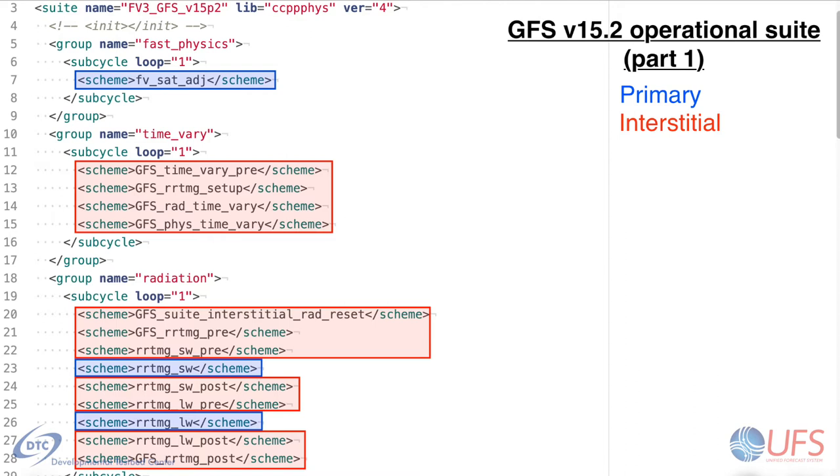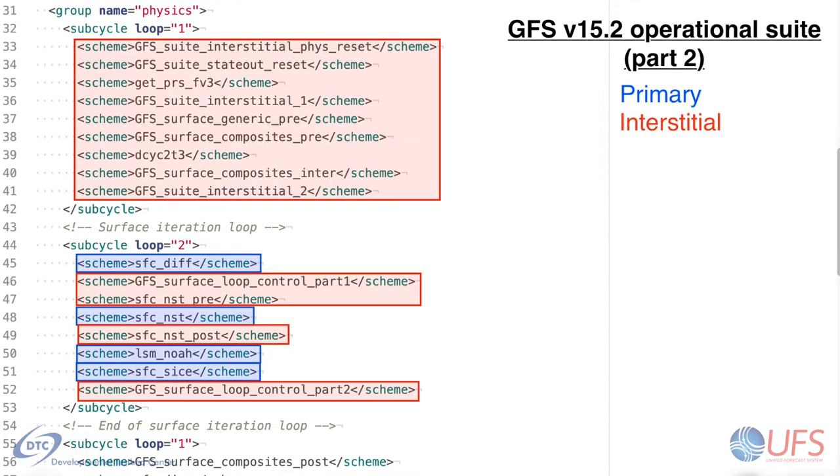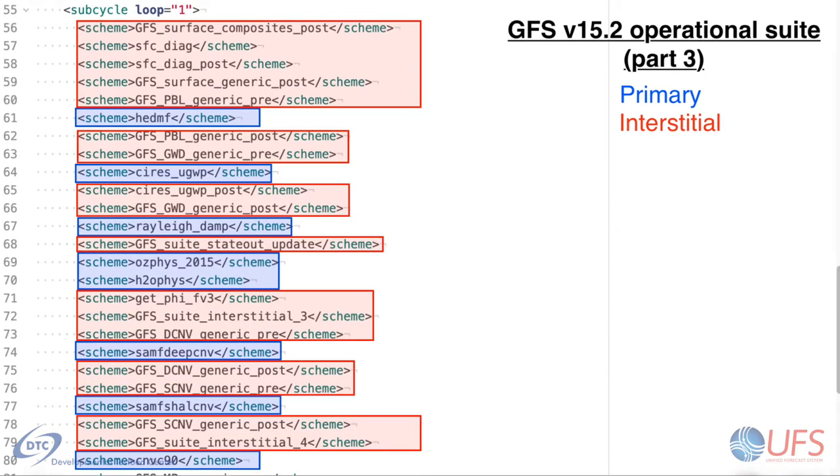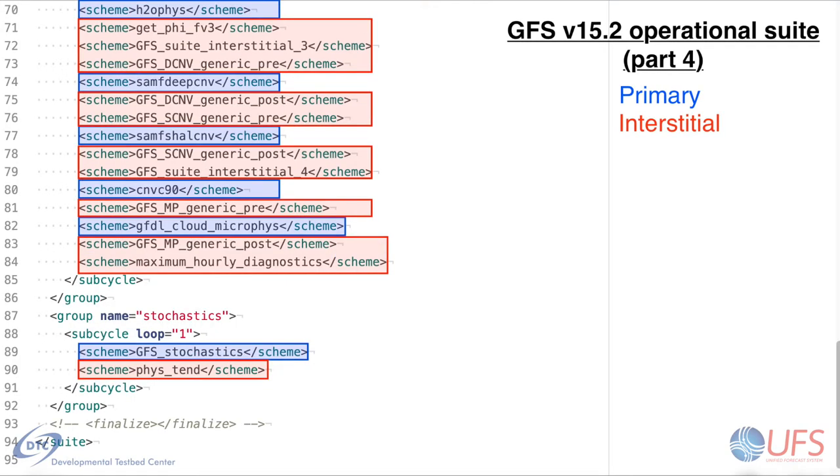Primary schemes within a suite are generally responsible for its scientific behavior and performance, whereas interstitial schemes ensure that the primary schemes work well together and make sure that a collection of schemes calculate all diagnostics expected by a host model. Note that it is anticipated that most interstitial schemes may eventually be replaced by auto-generated code from the CCPP software framework, such as variable conversions, common diagnostic calculations, etc., so that suites that have long suite definition files with many interstitial schemes today could potentially be considerably compacted in the future through automated code generation.